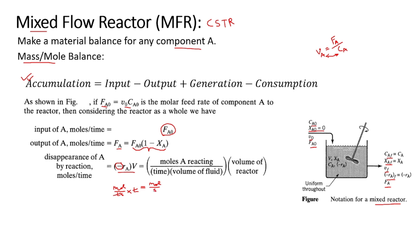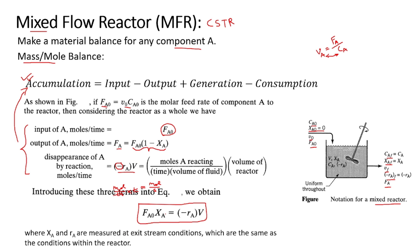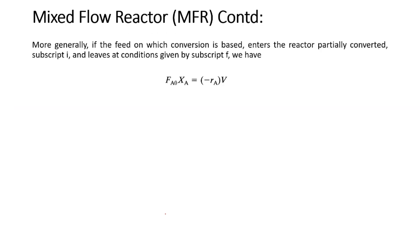With the input expression, output expression, and disappearance of A, putting all terms into the master equation and canceling common terms, the expression obtained is: F_A0 times x_A equals (-r_A) times V. Here x_A is the mass fraction of A and r_A is the reaction rate with respect to A.